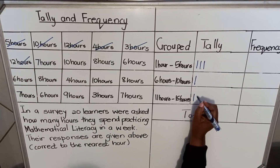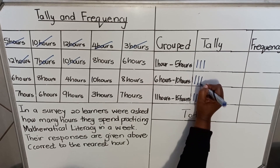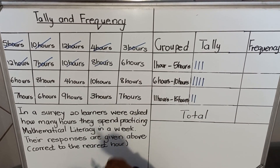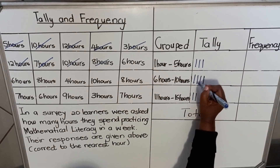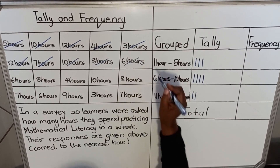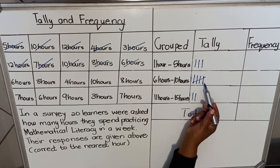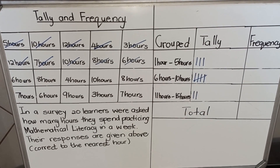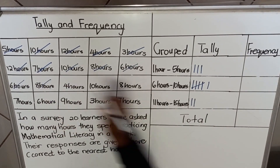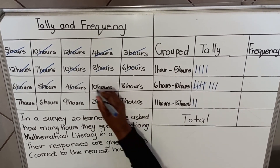Twelve hours falls in its category, then seven hours, then ten hours, then eight hours in the six-to-ten range. With tallies, each mark represents one. When you reach the fifth one, you cross it — so four vertical lines and one diagonal cross equals five. That's how you count a group of five in a tally.